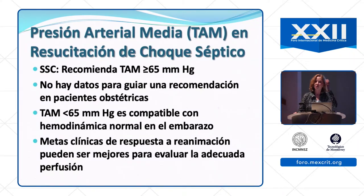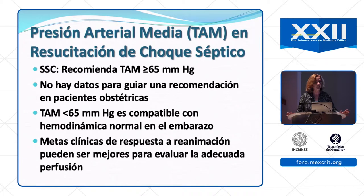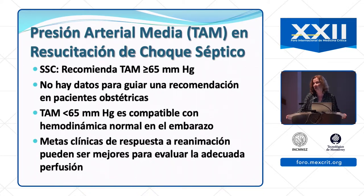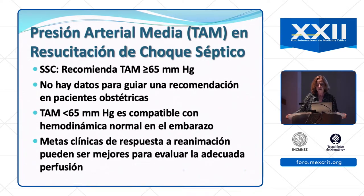The Surviving Sepsis Campaign targets a mean arterial pressure of 65 mmHg, but there is no data to guide that recommendation in obstetric patients. A mean arterial pressure less than 65 may be absolutely normal for a pregnant woman, so that goal is probably too high for the majority of patients. It may be better to use clinical goals to assess adequacy of perfusion rather than a specific blood pressure number.